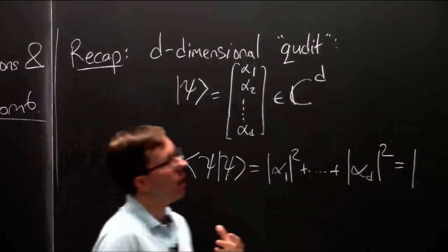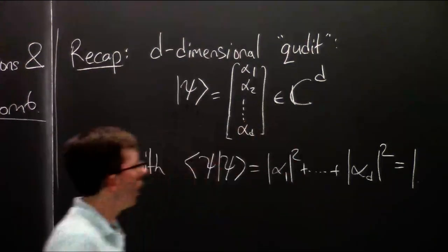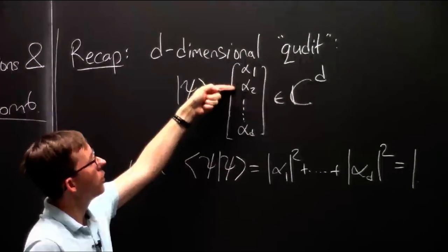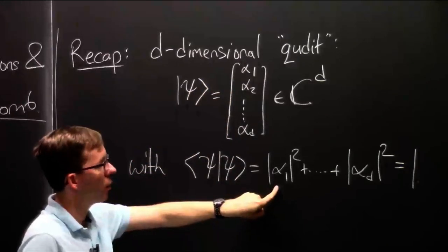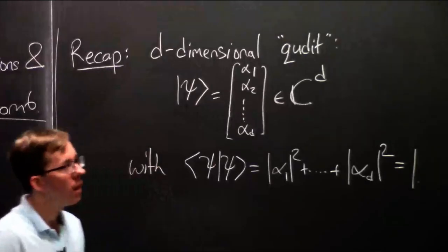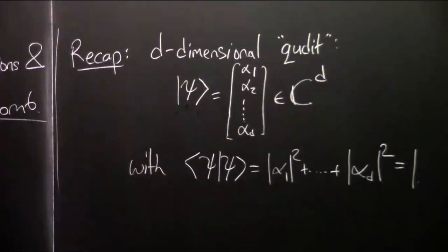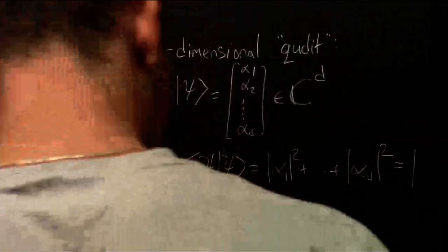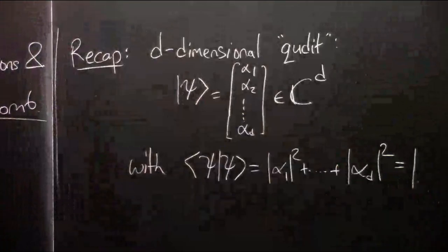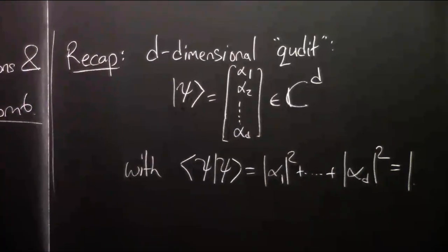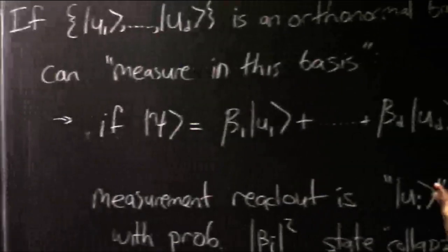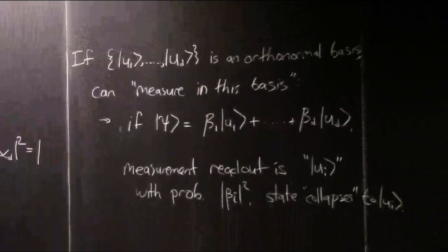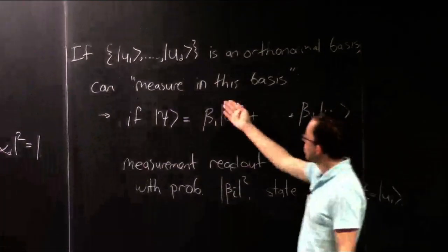What I was talking about at the very end was about the standard measurement, which tells you 1 through d with each of these as the probabilities — alpha 1 magnitude squared up to alpha d magnitude squared. But it's also physically possible to do something called measuring in another orthonormal basis. You can build a measuring device corresponding to your favorite orthonormal basis, say u1 through ud of d-dimensional space.